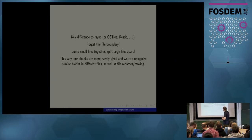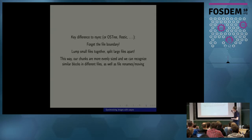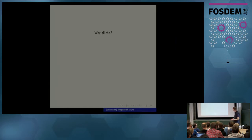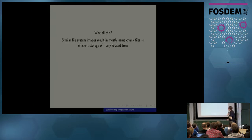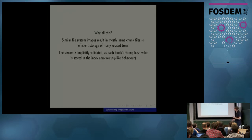On average, the chunks are evenly sized and we can recognize similar blocks in different files, file renames, files moving, and the same contents within files too. Similar file systems will result in mostly the same chunk files, and hence you get efficient storage of many related trees, all without keeping any kind of history.